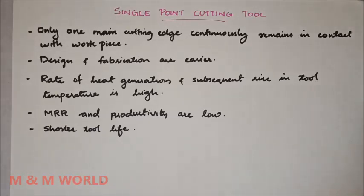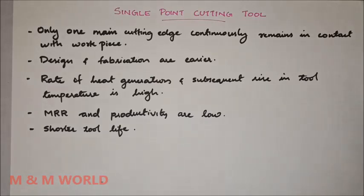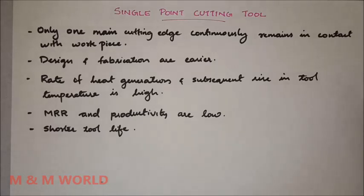A single point cutting tool has only one main cutting edge that continuously remains in contact with the workpiece, and its design and fabrication are easier. The rate of heat generation and subsequent rise in tool temperature is high. The material removal rate and productivity are low. Usually low feed rate and depth of cut is employed, and it has shorter tool life.